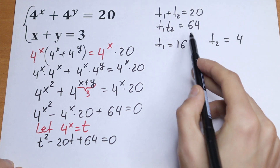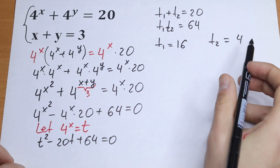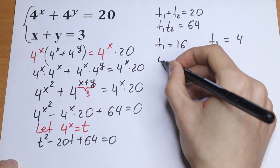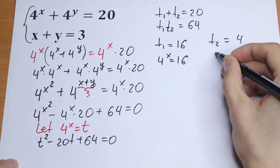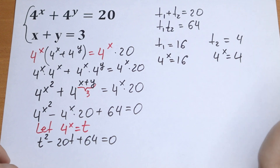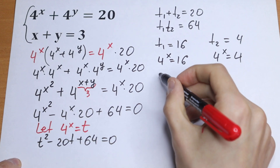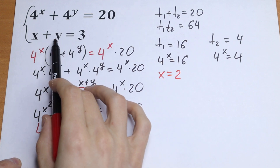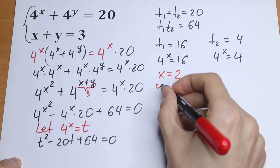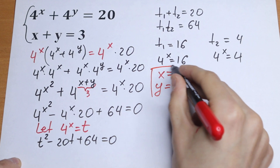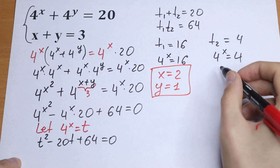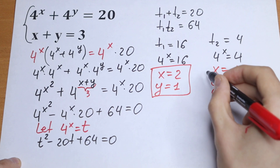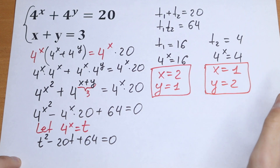Multiplying gives us 64 and adding gives 16 plus 4 equals 20. So we will have two pairs of roots. The first: 4 to the power x equals 16, so x equals 2, and since x plus y equals 3, y equals 1. The second: 4 to the power x equals 4, so x equals 1, and y equals 2.